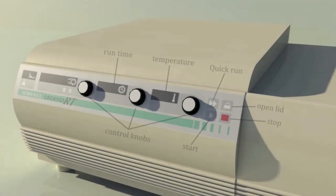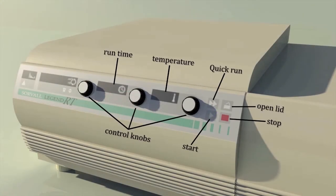Here on the front, we see three main control knobs. The one on the left is speed control, which we will use to control the speed of rotation of the rotor.